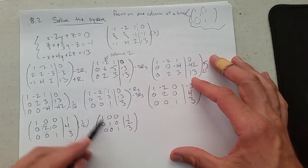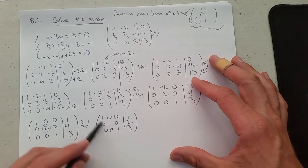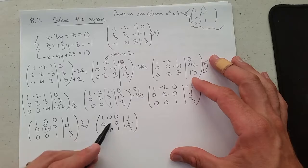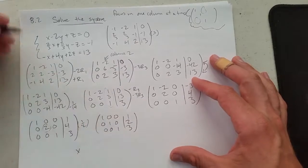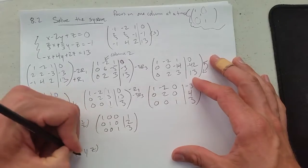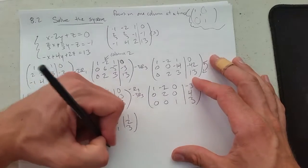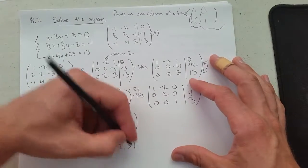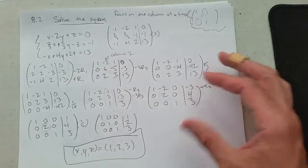All right. This is the perfect row reduced echelon form. There's no free variables. We had three variables. They all got locked down. So we got, originally it was x, y, and z. If you start out with x, y, and z, you don't want to start using x1, x2, x3. So this has the single solution right there.